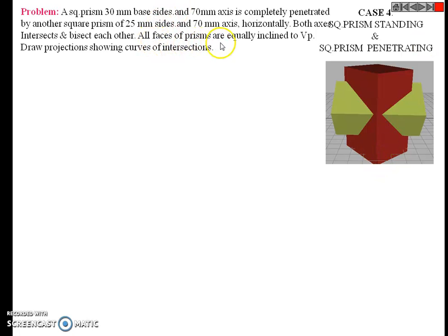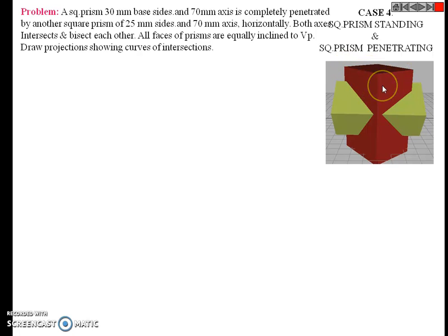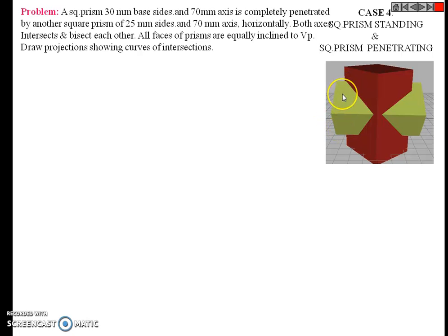All faces of both prisms are equally inclined to the VP. Equally inclined means they make an angle of 45 degrees. Similarly, the faces of the horizontal square prism also make an equal angle of 45 degrees.